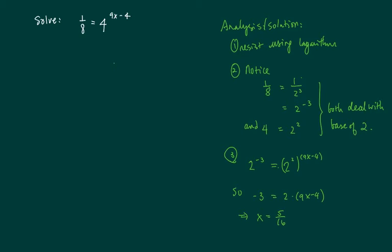Now using that, it's a much easier way to solve this particular problem, especially since the left-hand side and the right-hand side have something in common base-wise. So 2 to the minus 3 is on the left, and 2 to the square, times whatever I had in 9x minus 4, is on the exponents.